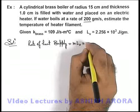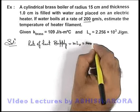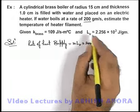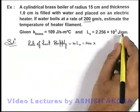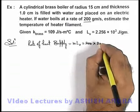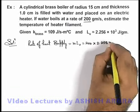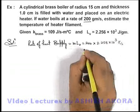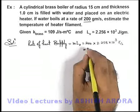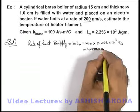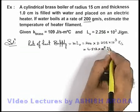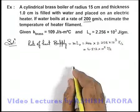m*Lv which can be given as 200 multiplied by the latent heat of vaporization. It is also given per gram so we can multiply 2.256 × 10³ joule per second. The result we are getting is 4.512 × 10⁵ joule per second.